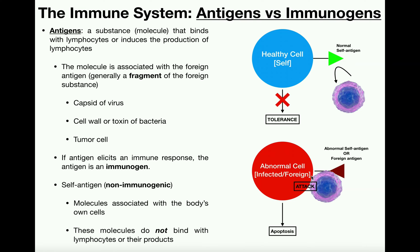Now let's look at the situation where we have an abnormal cell. All cells display an antigen on their surface. An abnormal cell could be one of two things: it could be one of your own cells that's been infected with a virus, or it could be a foreign cell, such as in the case of a bad transplant. It could also be a cancer cell — one of your own cells that's become cancerous. In any of those cases, that cell, regardless of whether it's foreign or self, is going to be displaying what appears to your immune system as a foreign antigen.